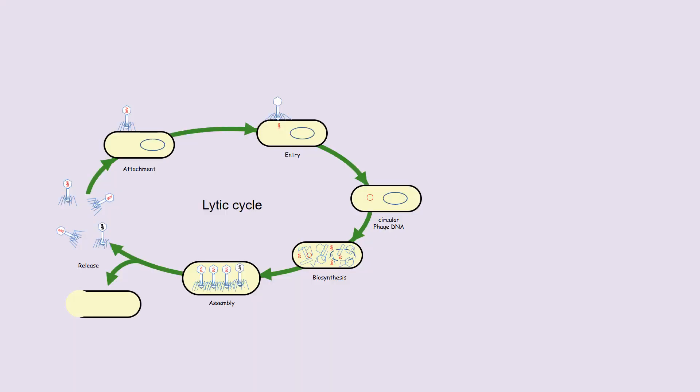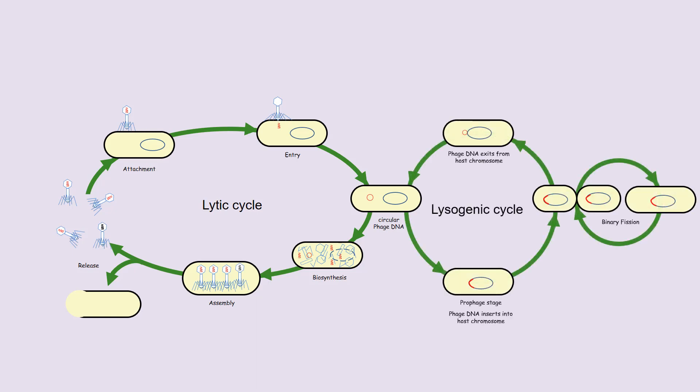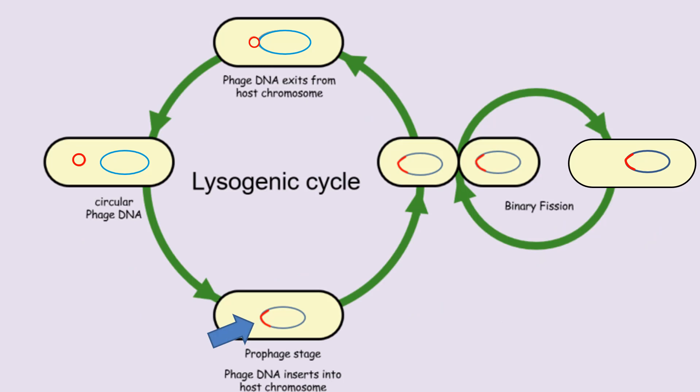Besides the lytic cycle, phage also have a lysogenic cycle. In this case, the attachment and entry stages remain the same, but instead of the DNA circularizing on itself, it will insert itself inside the new host's chromosome. This bacteriophage DNA is now called a prophage, to denote the fact that it has become part of the host chromosome and is no longer independent. As the bacterial cell grows and divides by binary fission, the phage will replicate along with the host chromosome, and thousands if not millions of new bacterial cells will be made, all containing the prophage as part of their chromosomes.